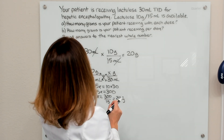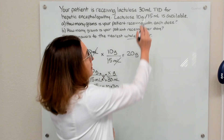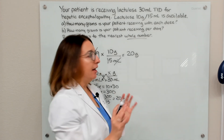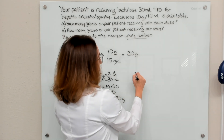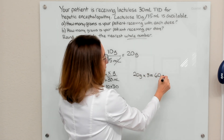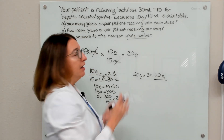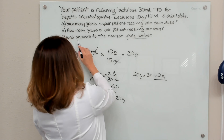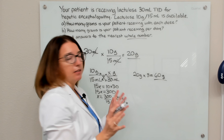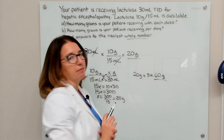Part B asks how many grams the patient receives per day. Since the patient gets this TID — three times a day — we take the 20 grams per dose and multiply by three, giving 60 grams per day. We were instructed to round to the nearest whole number, and both answers came out to whole numbers already. So 20 grams per dose and 60 grams per day.